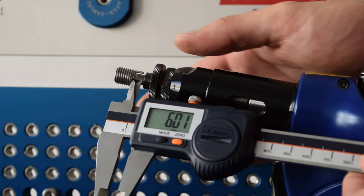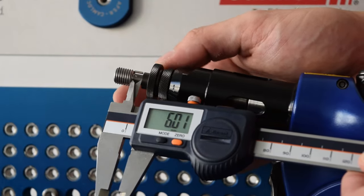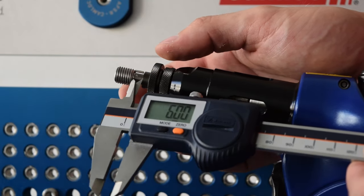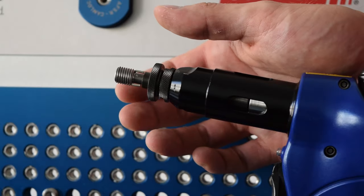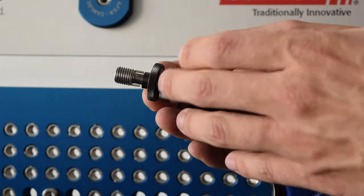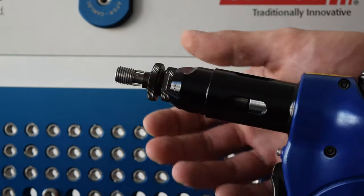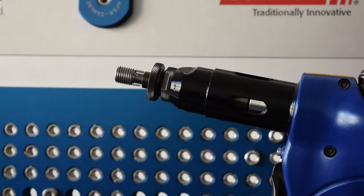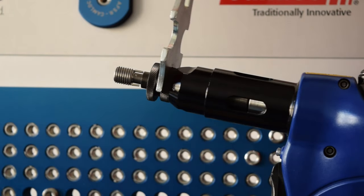Screw the driver back into the sleeve until there is a distance of 5.75mm to 6.25mm between the body of the insert and the driver. Then tighten the lock nut to save your adjustment.